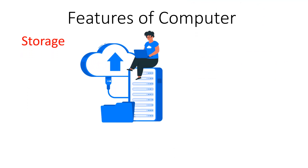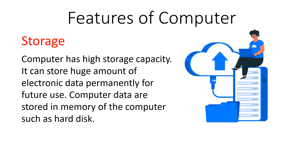The next feature is storage. Our computer system has high storage capacity — it can store data in its computer memory for a long period of time so that we can access it whenever we require. Computer can store huge amounts of electronic data permanently, and these data are stored in the secondary storage device of a computer system, like a hard disk.